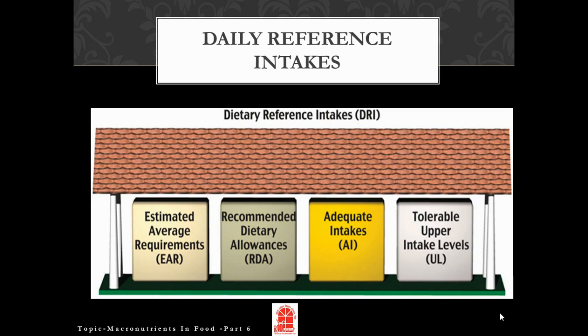The tolerable upper intake level, or UL, was established to help distinguish healthful and harmful nutrient intakes. Developed in part as a response to the growing usage of dietary supplements, ULs indicate the highest level of continuous intake of a particular nutrient that may be taken without causing health problems. When a nutrient does not have any known issue if taken in excessive dose, it is not assigned a UL. However, even when a nutrient does not have a UL, it is not necessarily safe to consume in large amounts.